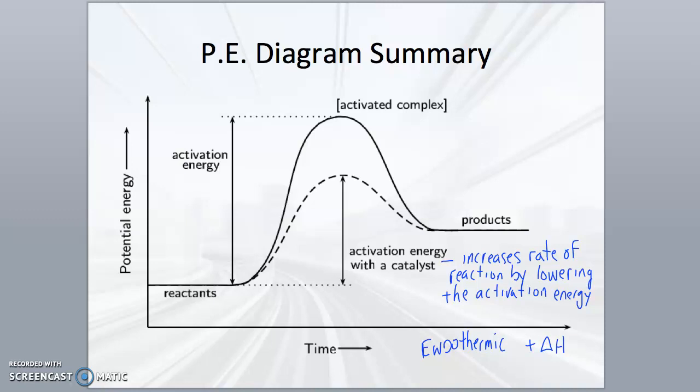The dashed line in this plot represents the activation energy in the presence of a catalyst. A catalyst lowers the activation energy of a reaction without affecting the reactants or the products.